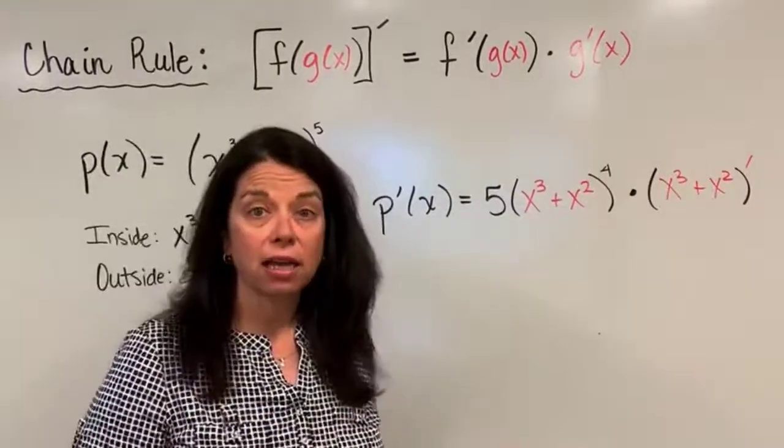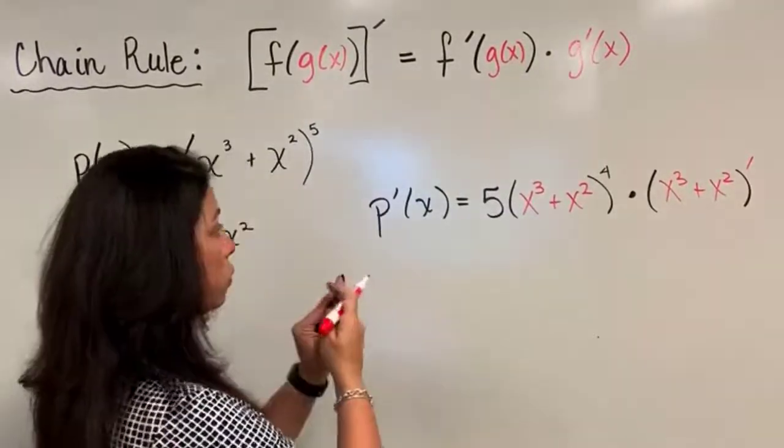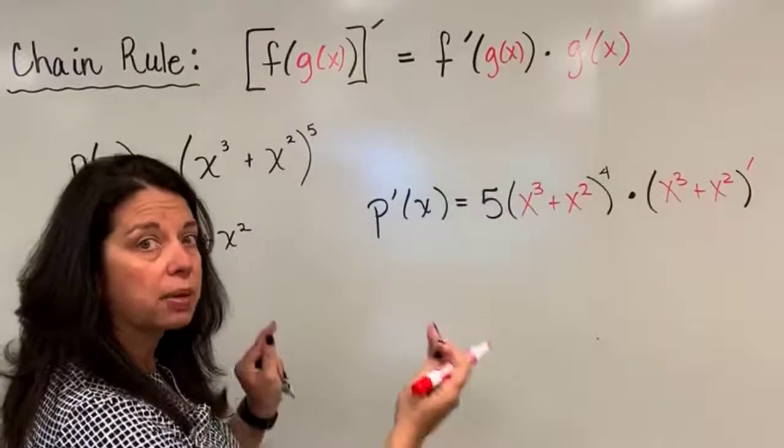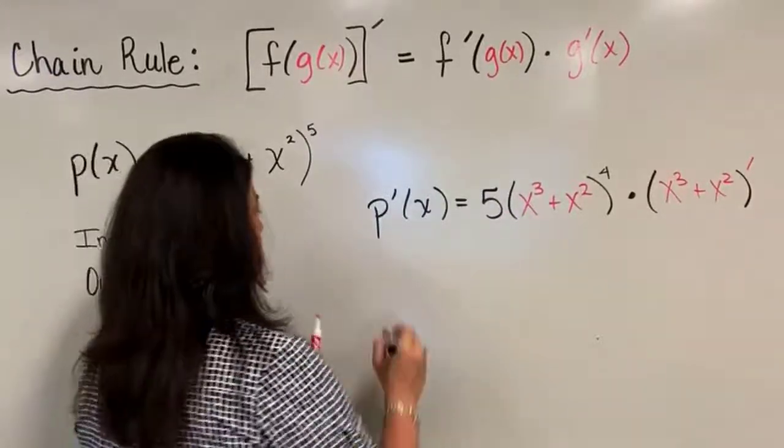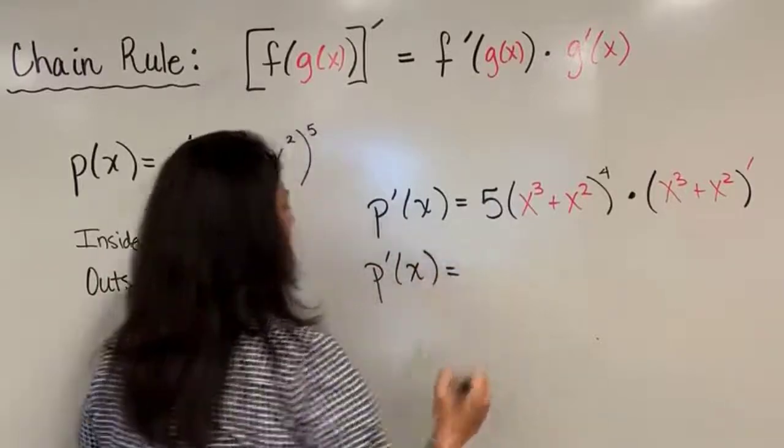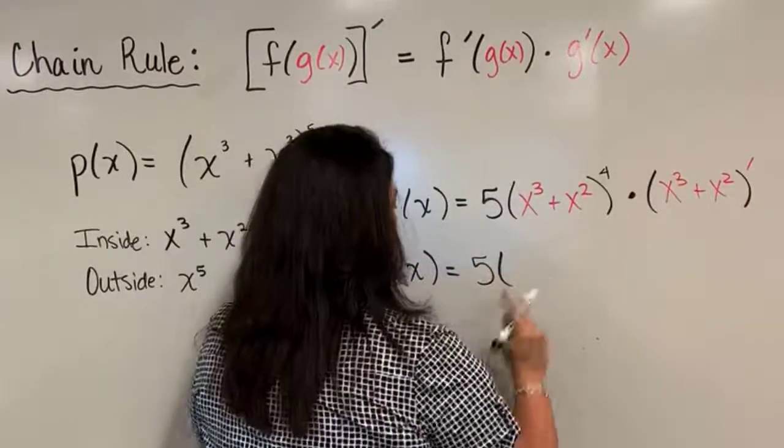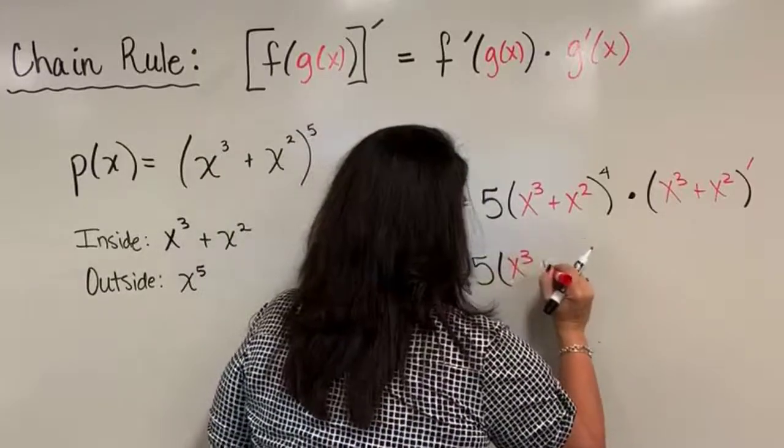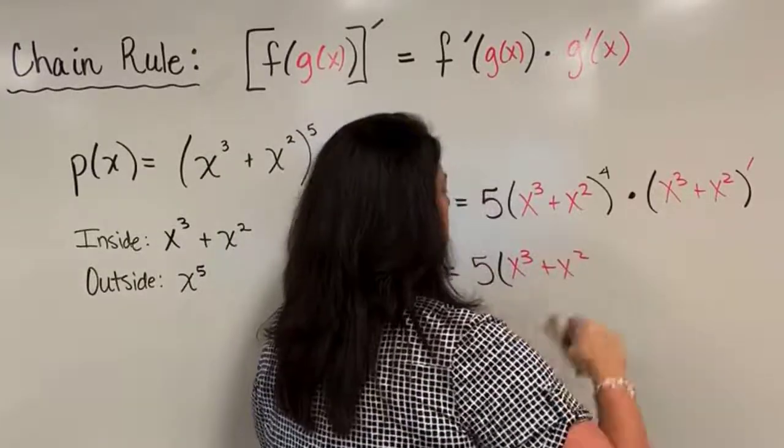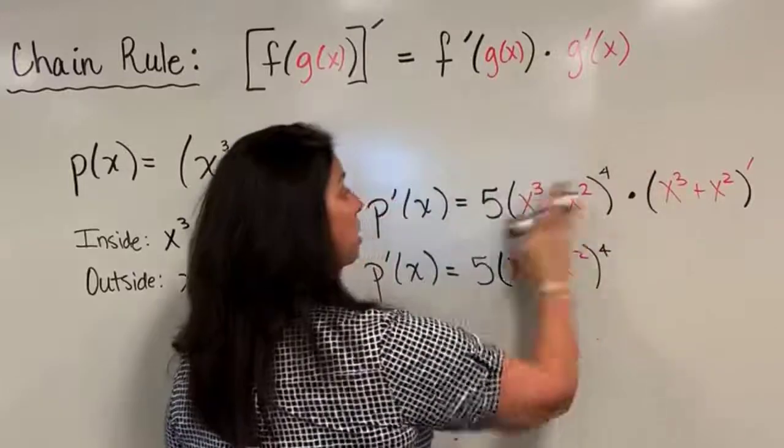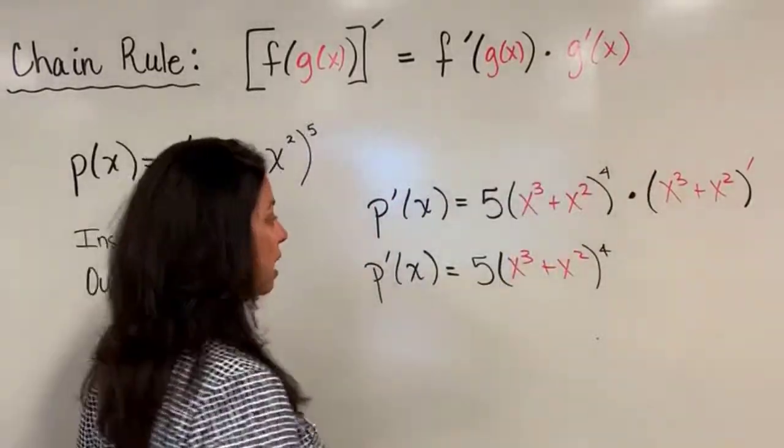So I will multiply by the derivative of that inside function, x cubed plus x squared, and then obviously I got to take that derivative there. So I'm not done and I'm a fan of always doing kind of one step at a time as I work through my problem. I've got one more step to finish this derivative off. I've got p prime of x equals five times my x cubed plus x squared to the fourth power. Again, nothing changes, I just get to copy that down.